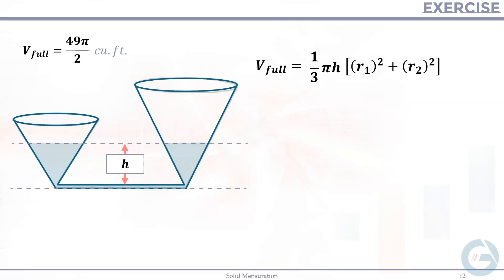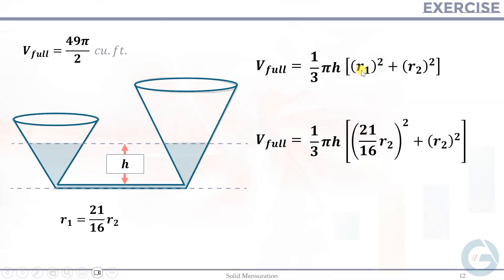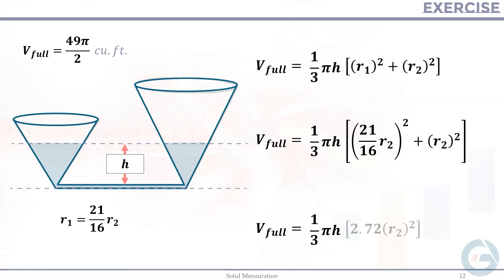Substituting R₁ = (21/16)R₂ into the equation: V = (1/3)πH · [(21/16)²R₂² + R₂²]. Simplifying (21/16)² + 1 gives approximately 2.72, so V = (1/3)πH · 2.72R₂².